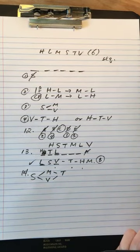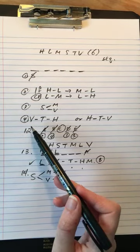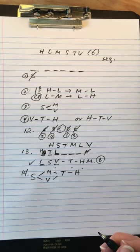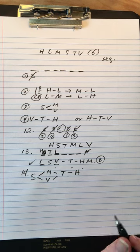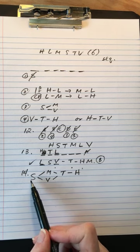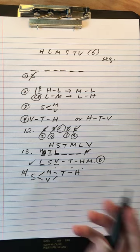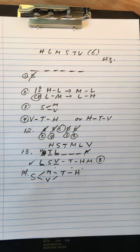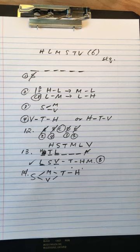If the table is later than the vase, then the harmonica is later than the table according to rule 4. And S can't be first, so the lamp actually has to be first. So we're dealing with a very similar situation to question 13.